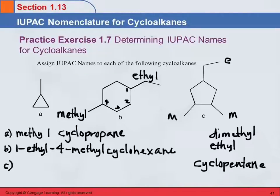We have to figure out how to number this. We're going to start at one of the substituents. Let's try starting with the ethyl: one, two, three, four. If we number the other way: one, two, three, four — we end up with the same numbers. We get a one, a three, and a four.